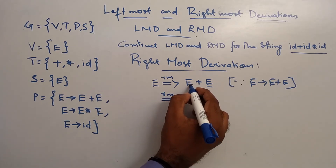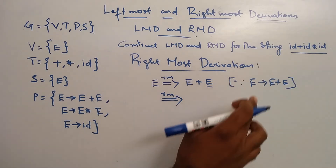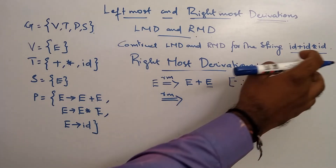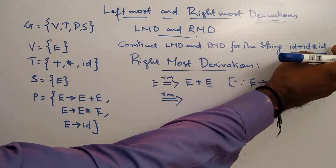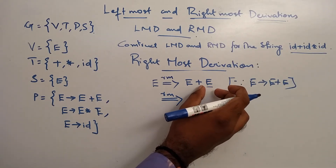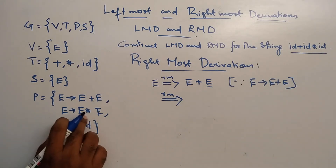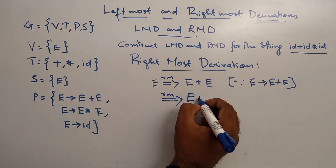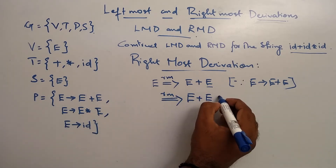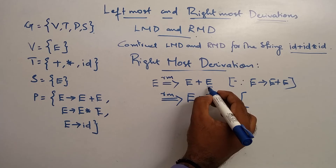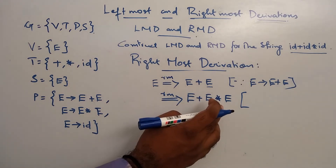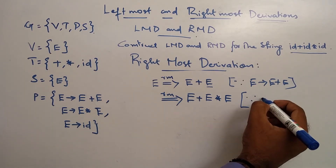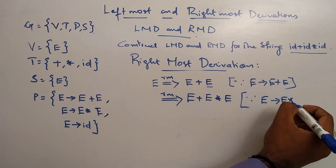RM — rightmost derivation. So in the right side, in the production replace: E plus E. This E on the right can be replaced, and this is E star E. So E plus E star E.